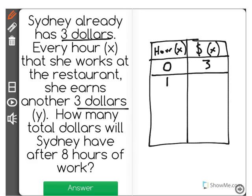So after one hour, that's 3 plus the 3 she started with for 6. It wants to know how many dollars she'll have after 8 hours of work. So the best way to do this is to continue down with the table.